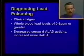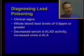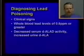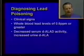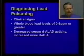Diagnosing lead poisoning involves clinical signs consistent with lead toxicity and analysis of whole blood for lead. Whole blood levels greater than 0.6 parts per million are definitely indicative of lead toxicity. Levels of 0.35 parts per million can be consistent with poisoning if other evidence is present, such as decreased serum delta-aminolevulinic acid dehydratase activity or increased levels of aminolevulinic acid in the urine.